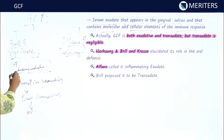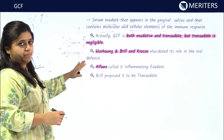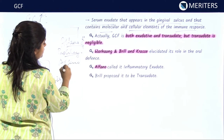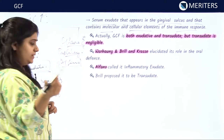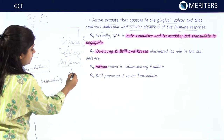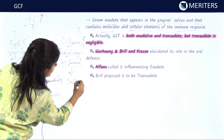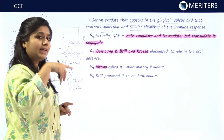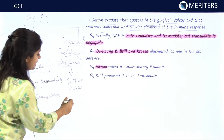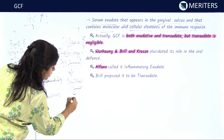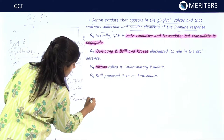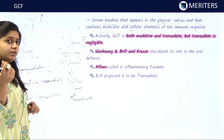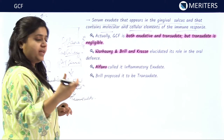Later on, Alfano and Paschle proposed that the initial fluid formed into the GCF is a transudate, due to a change in the osmotic gradient of the blood capillaries. But as the inflammation increases, it leads to the formation of exudate.